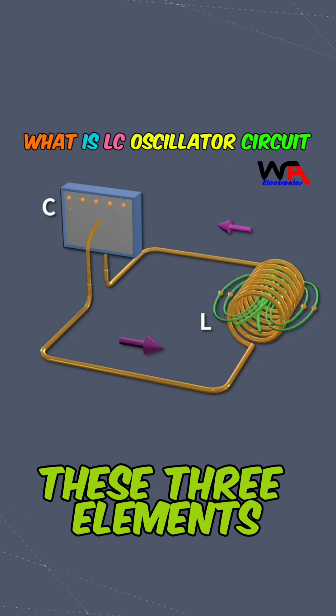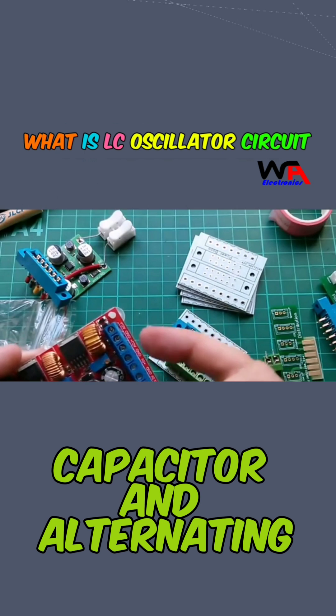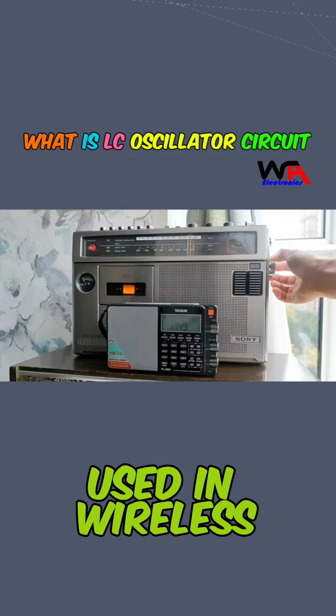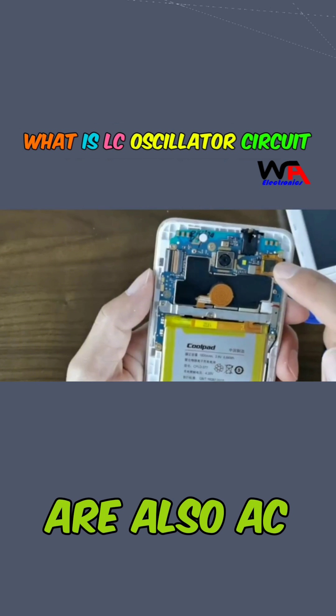In addition to these three elements, inductor L, capacitor, and alternating current AC, the electromagnetic waves used in wireless communication are also AC signals.